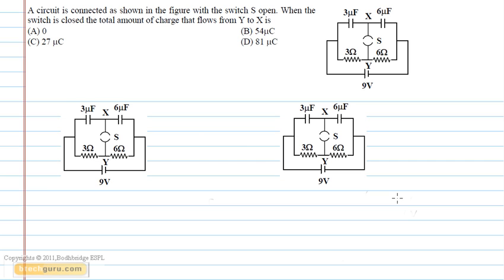In this question, we have to find out the total amount of charge that flows from the Y terminal to the X terminal when the switch S is closed. First, we'll find out the total charge at the X terminal when the switch is open, and then the amount of charge on the X terminal when the switch is closed. The difference of that will give us the amount of charge that has flown from Y to X.